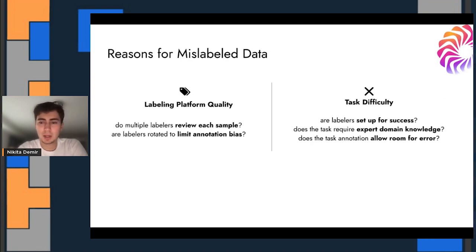It's important for the labeling platform to not only rotate labelers through the dataset, but also have multiple labelers review each sample. Also, sometimes the task is difficult. For example, perhaps there's some domain knowledge that labelers might know. Maybe it's a healthcare dataset and you ultimately need doctors to be the ones to label it. Also, sometimes there's not a lot of room for error. This might happen in scenarios where multiple labels might apply to the same example. One other reason is that classes can also just be confusing and we'll cover this more in the class overlap data error.